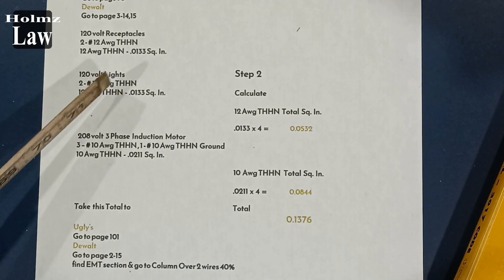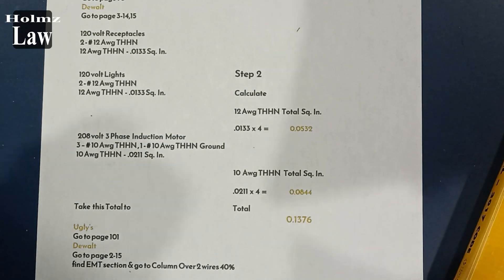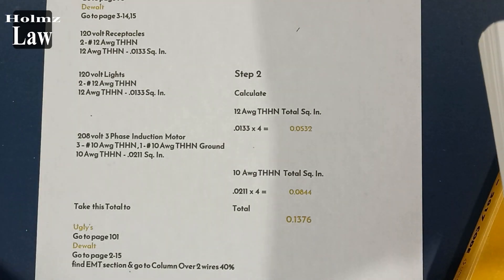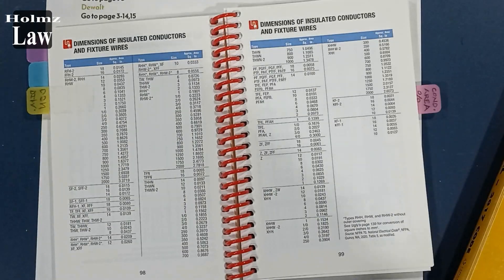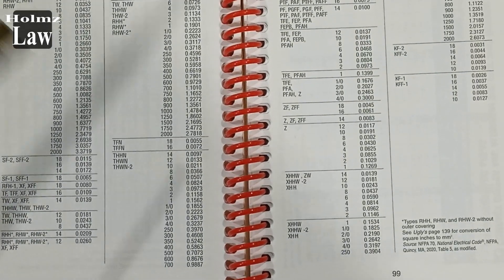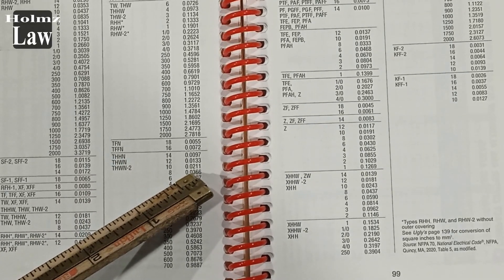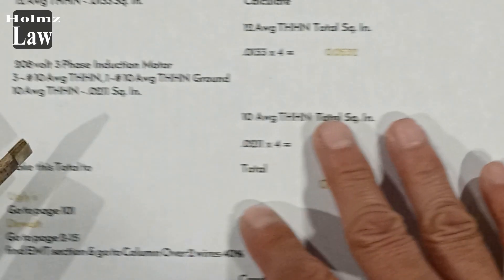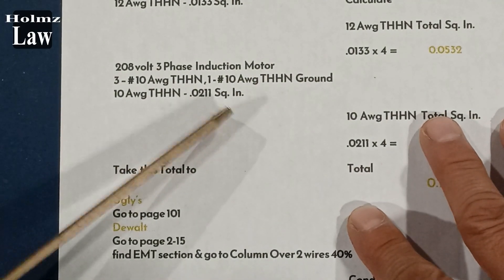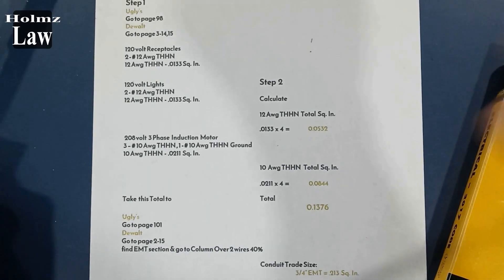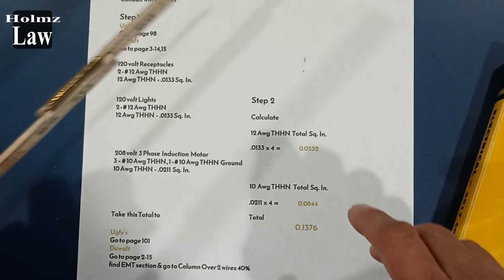If you were using a different insulation type, you'd look that up separately. For the motor circuit, we need the 10-gauge square-inch dimension. On page 98 of the Ugly's, under 10-gauge, you'll find 0.0211 square inches — write that down as well. So now we have our two values: 0.0133 for 12-gauge THHN and 0.0211 for 10-gauge THHN.